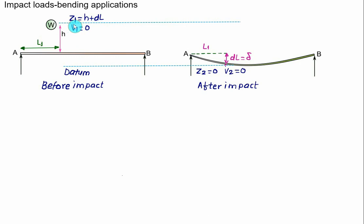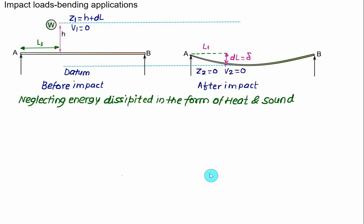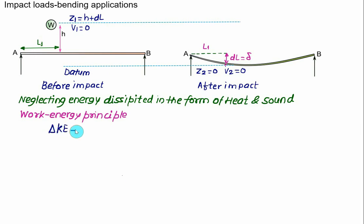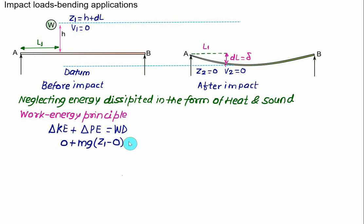We can calculate the change in kinetic energy and the change in potential energy. Neglecting energy dissipated as heat and sound and applying the work-energy principle: delta kinetic energy plus delta potential energy equals work done. Delta kinetic energy equals zero because initial and final velocities are zero. Delta potential energy equals m times g times (z1 minus z2), which equals the work done, where z1 equals h plus dl and z2 equals zero.